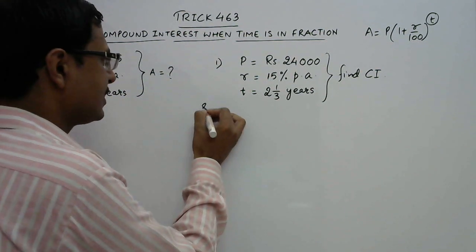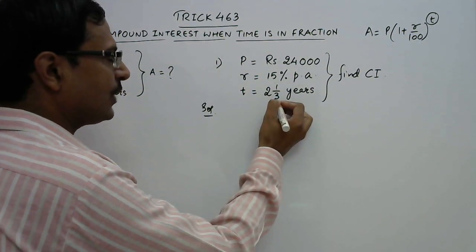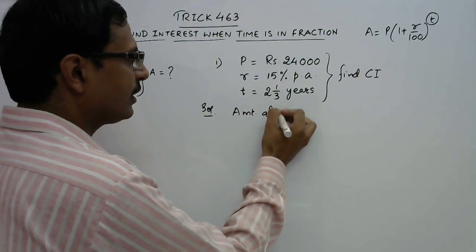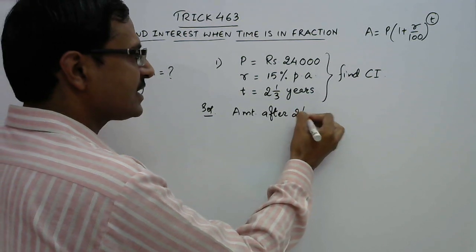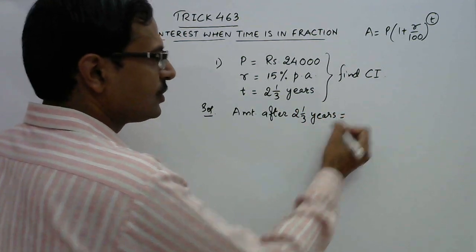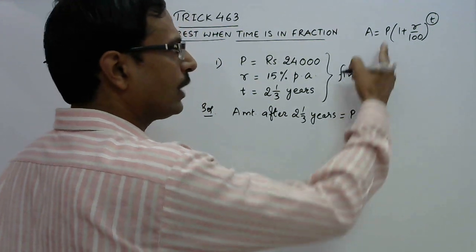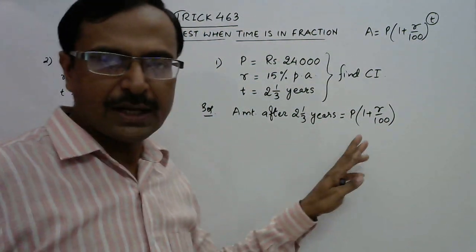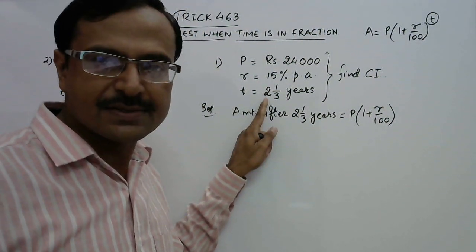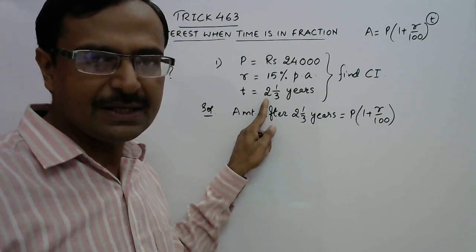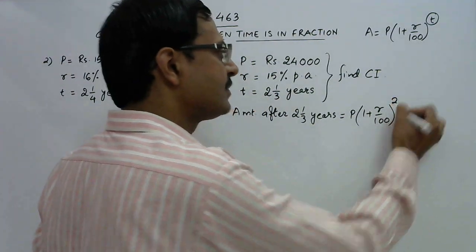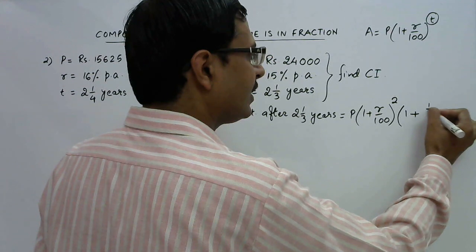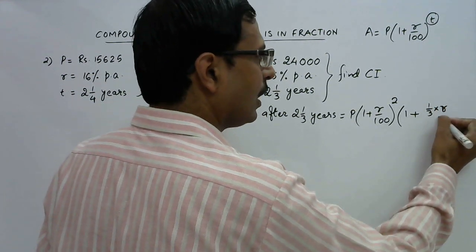In such questions, you need to find out the compound interest so first we need to find out the amount after 2 1/3 years in this case. We start the formula for amount like this: P into 1 plus r upon 100, raised to the power of rounded years. See 2 years are clear here and 1/3 year further.